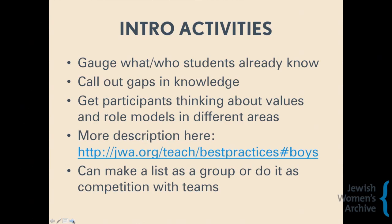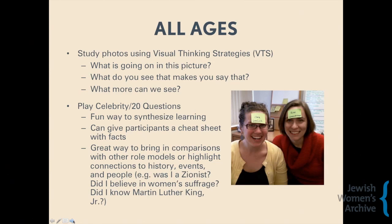Here are two activities great for all ages. The first is using Visual Thinking Strategies to study historic photographs or pieces of art. You ask three simple questions: What is going on in this picture? What do you see that makes you say that? And what more can we see? After students observe the photograph and discuss it, you introduce historical context and bring in other photographs to compare.